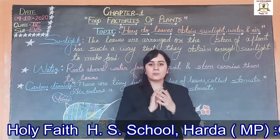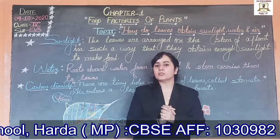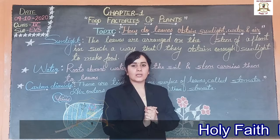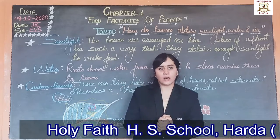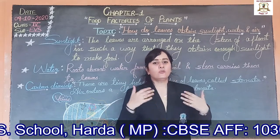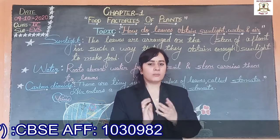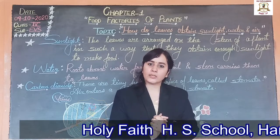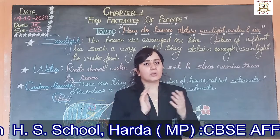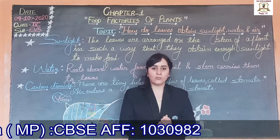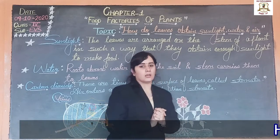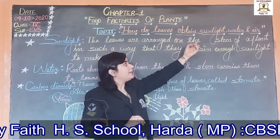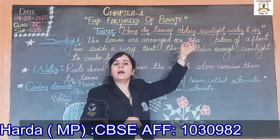And where do plants make their food? Plants make their food in their leaves, so leaves are called food factories of the plant. Plants need carbon dioxide, water, sunlight and chlorophyll to make their food. In this class we will learn how leaves obtain sunlight, water and air.